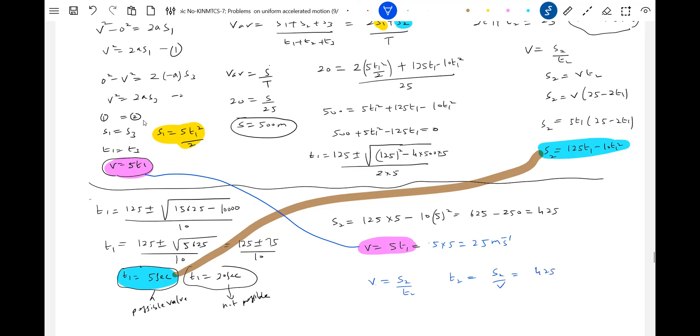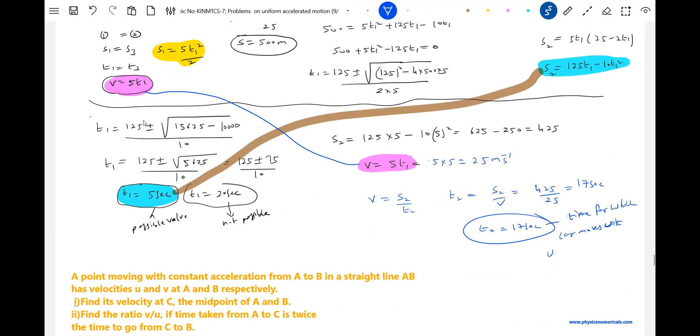I'm not good in math, to be frank. 425 divided by 25 should be 17. This is the time for which the body moves - the car moves with uniform speed for 17 seconds.